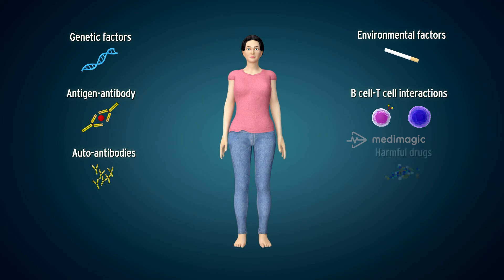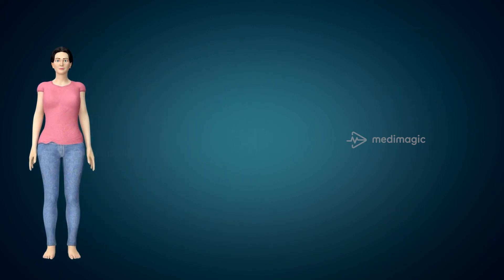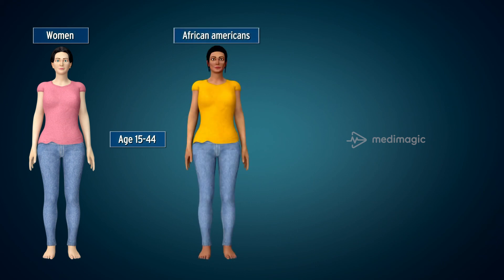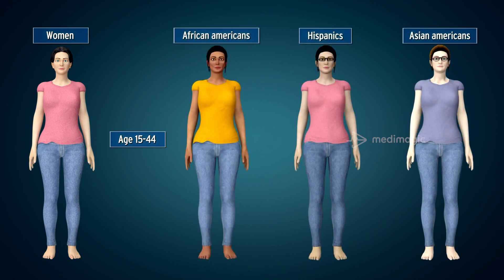Exposure to harmful drugs and their adverse reactions, exposure to UV radiation, and hormonal irregulation are suspected causes of lupus erythematosus. Lupus is more common in women and, although it affects people of all ages, it is mostly diagnosed between the ages of 15 and 44. Lupus is more common in African Americans, Hispanics and Asian Americans.